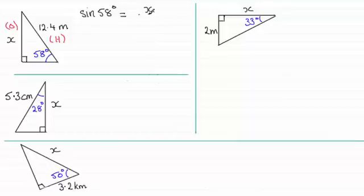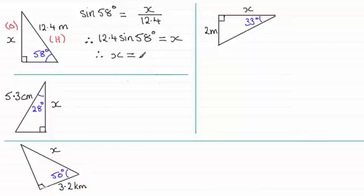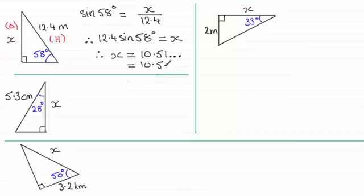The sine of 58 degrees equals the opposite divided by the hypotenuse — so it's X divided by 12.4. When X is on top, we remove the denominator by multiplying both sides by 12.4, giving us X = 12.4 × sin(58°). Working that out on your calculator — make sure it's in degrees mode — gives 10.51..., which rounds to 10.5 meters to one decimal place.